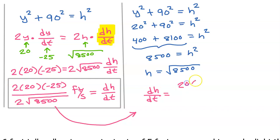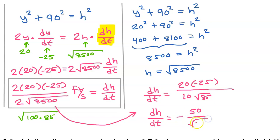And that's going to leave me with my 20 times negative 25 in the numerator. In my mind, I'm thinking that the square root of 8,500 is the same thing as the square root of 100 times 85. That makes it obvious that this simplifies to 10 radical 85. 10 goes into 20 twice. 2 times negative 25 is negative 50. So we end up with negative 50 over the square root of 85. So here is a more simplified expression for dh/dt.